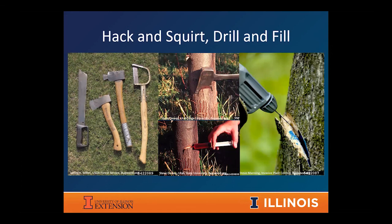The hack-and-squirt or drill-and-fill method is one I've only recently begun using but am intrigued by — the efficiency seems like you can get a lot more work done than with some other methods. We're testing the efficacy of different herbicides on smaller woody species at the ag center to see how it works. Basically you make a series of either hatchet cuts or drill holes. Not all herbicides can be used for this method — you have to check the label, but there are different versions of glyphosate and triclopyr and a few others that work for this method.